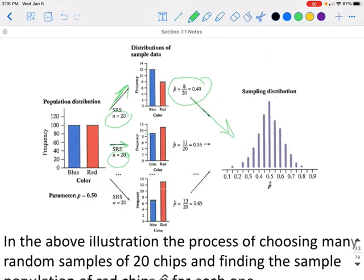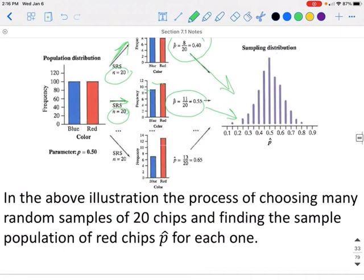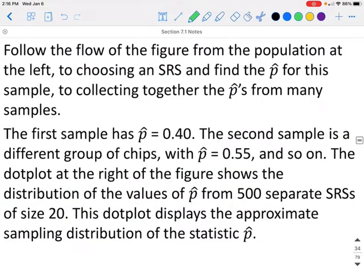We would take another sample of size 20. This time they got 9 blue and 11 red, so the probability of getting red is 55%, and you would plot it in your distribution. You would keep doing this for more and more samples. In the above illustration, the process of choosing many random samples of 20 chips and finding the sample probability of red for each one. You would take a bunch of different samples, find the probability, and then plot those together to make your sampling distribution.